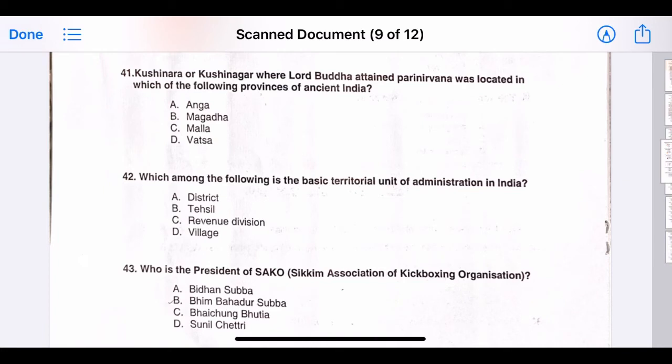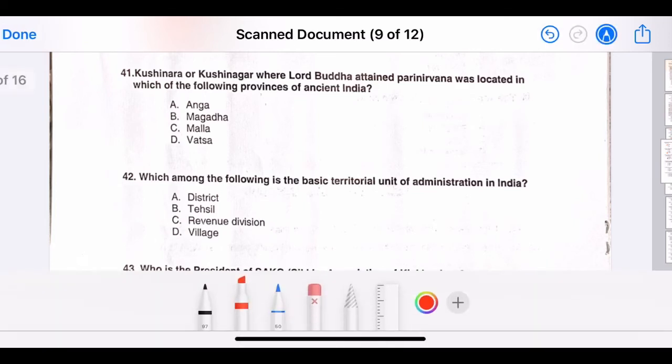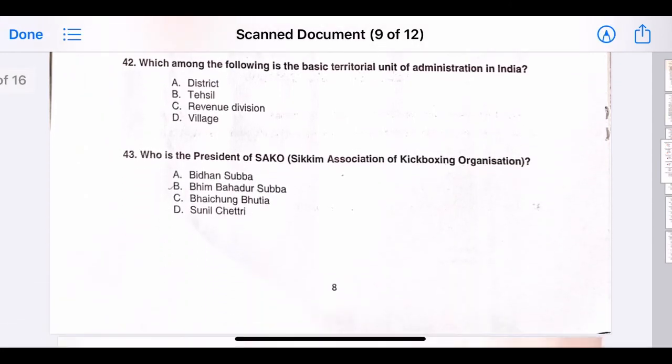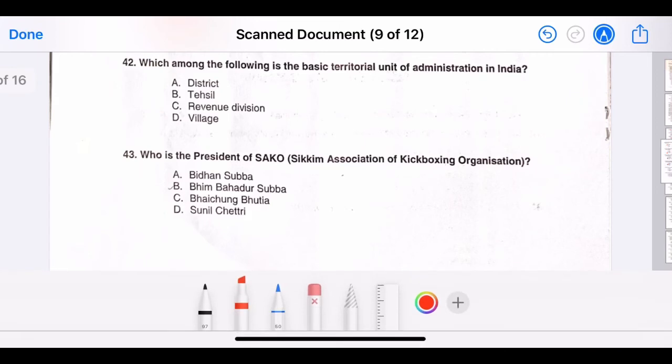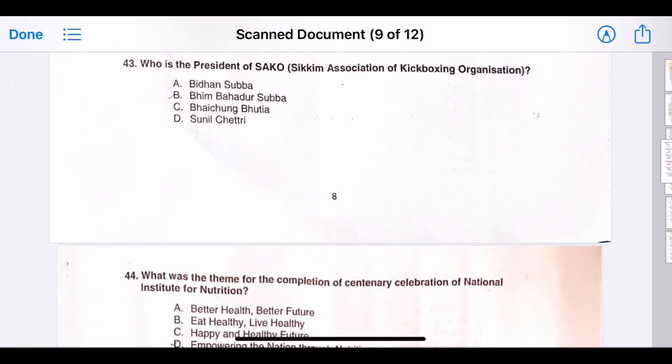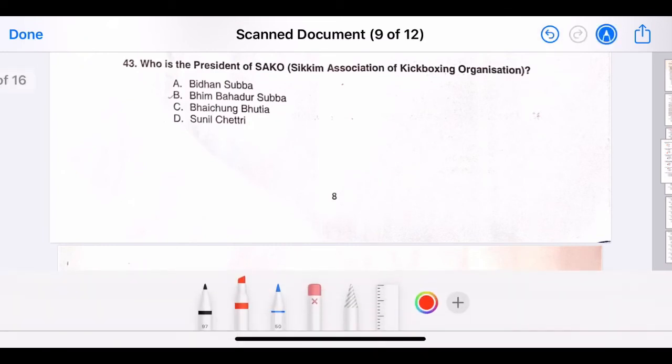Forty-one, Kushinara or Kushinagar where Lord Buddha attained Parinirvana was located in which of the following provinces of ancient India? The correct answer is option C, Malla. Forty-two, which among the following is the basic territorial unit of administration in India? The correct answer is option A, district. Forty-three, who is the president of SAKO, Sikkim Association of Kickboxing Organization? The correct answer is option B, Bhim Bahadur Subba.